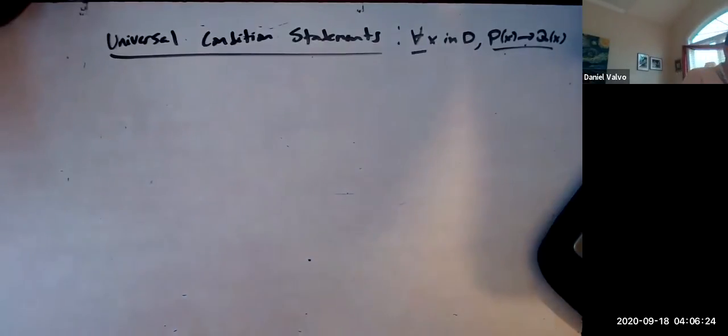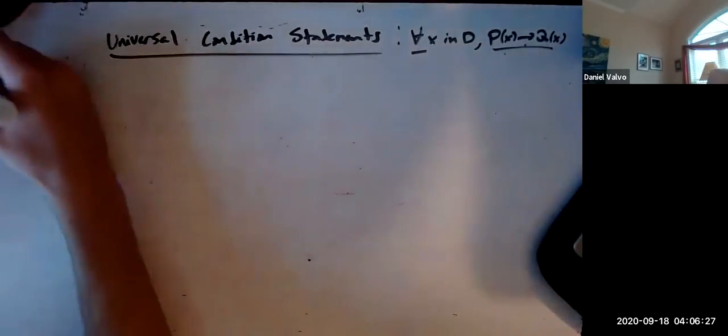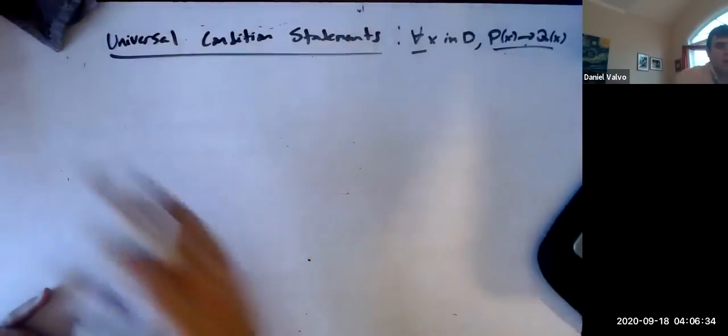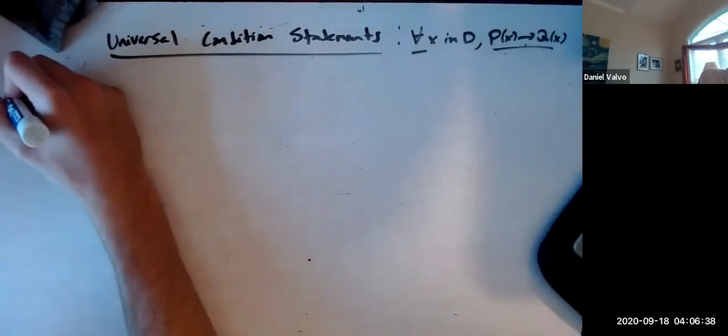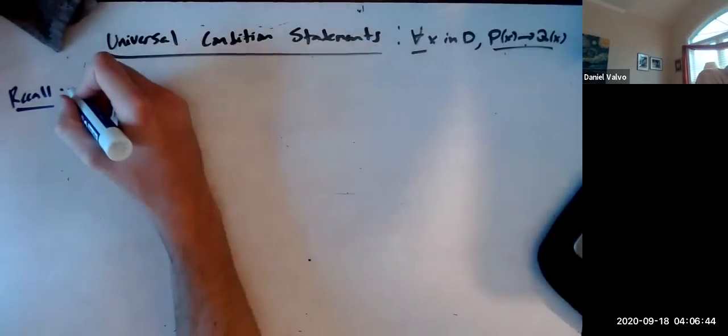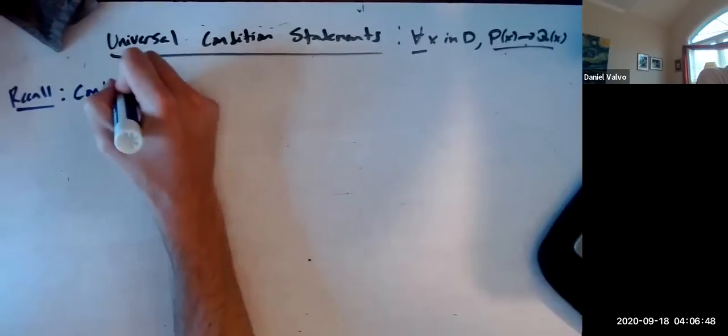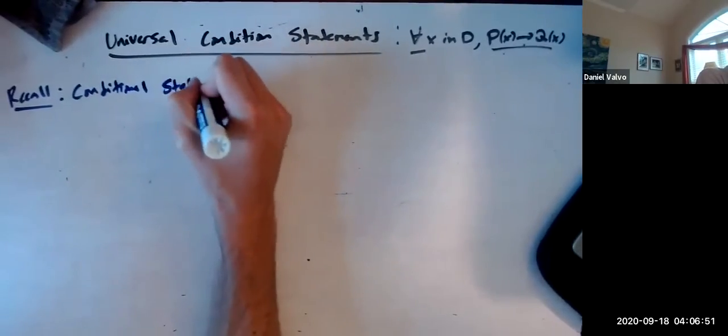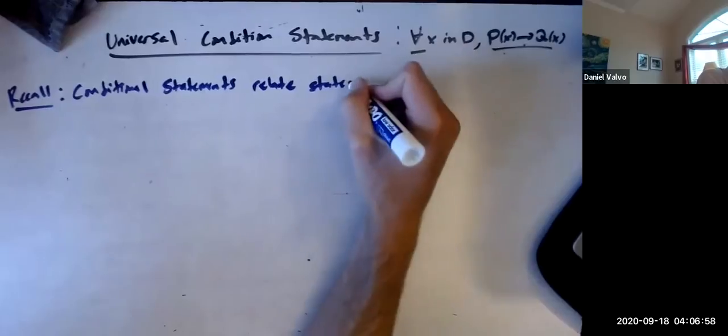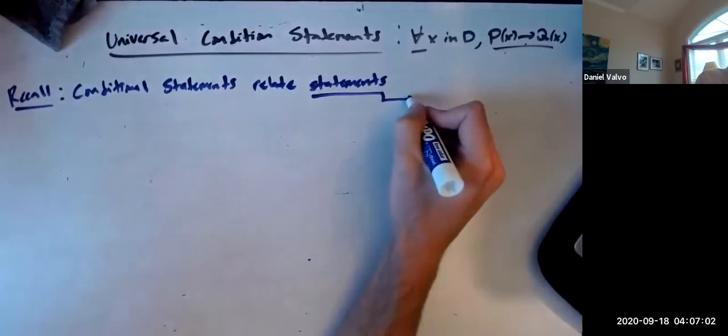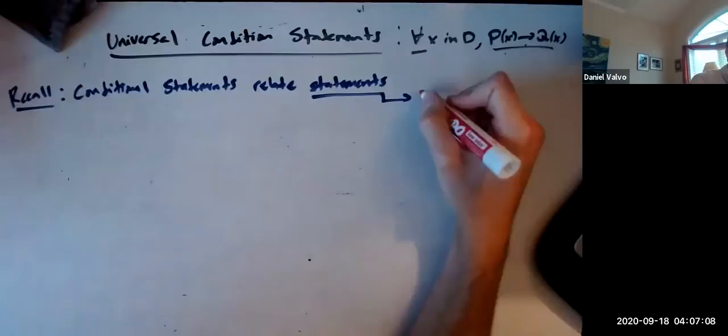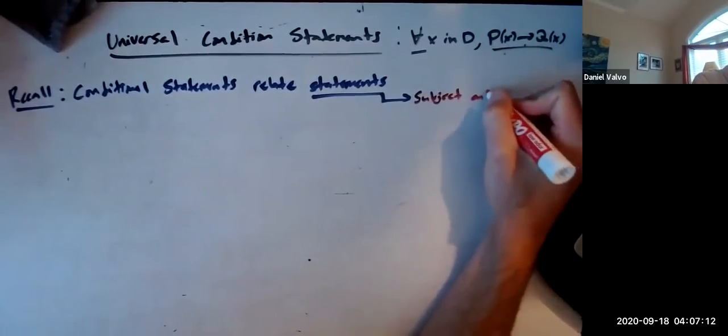Now, let's recall we were talking about why this is so important. Basically all of last time was me going on a rant of why this is the most amazing thing in math, or the most important statement in math. So before we had, recall, we had regular conditional statements. Regular conditional statements relate statements. And statements have a subject and a property.